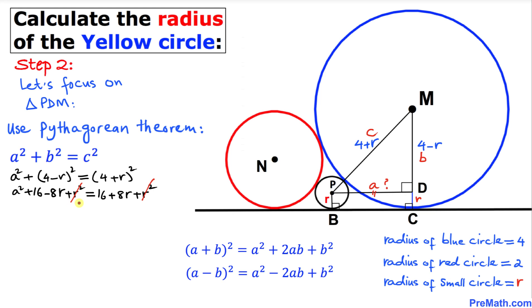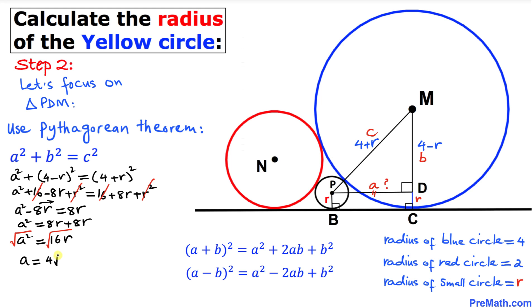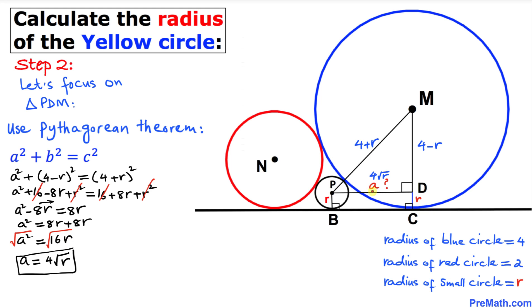The r² terms cancel on both sides, and the 16s cancel as well, leaving a² − 8r = 8r. Moving −8r to the right: a² = 16r. Taking the square root of both sides gives a = 4√r. Since BCDP is a rectangle, side BC equals side PD, so BC = 4√r.